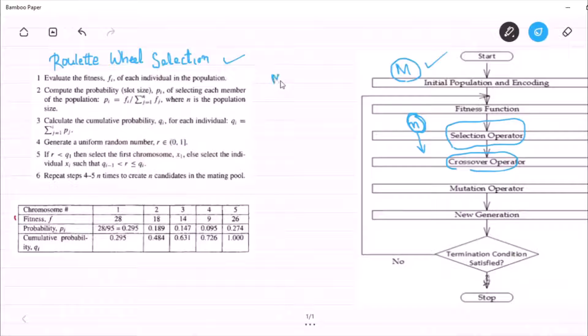Assume that there are 5 people in my population. Now let's assume the small n is 3. What is the small n? The small n is nothing but the size of the mating pool. It means out of 5, we have to select 3 individuals.